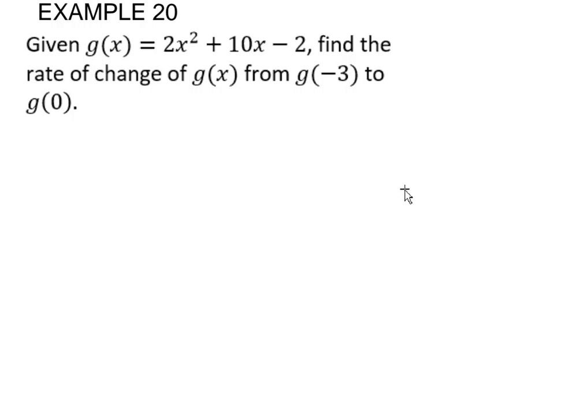All right, for example 20, we're going to take g of x equals 2x squared plus 10x minus 2 and find the rate of change for g of x from negative 3 to 0.